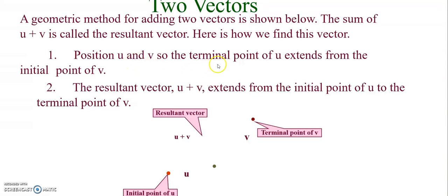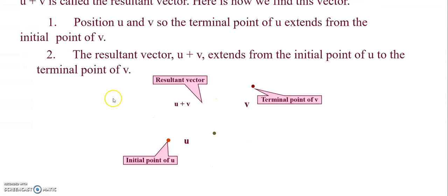We're going to position u and v so the terminal point of u extends from the initial point of v. The resultant vector u plus v extends from the initial point of u to the terminal point of v.